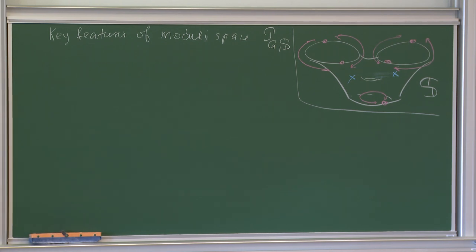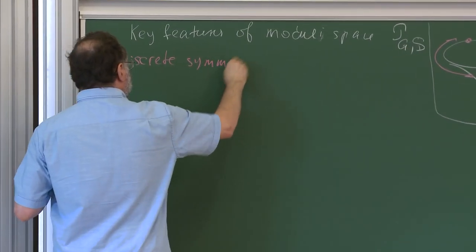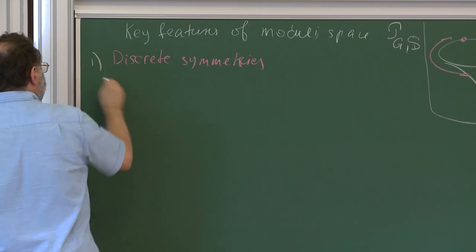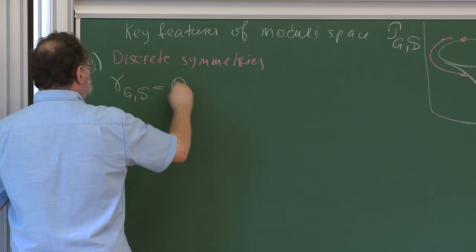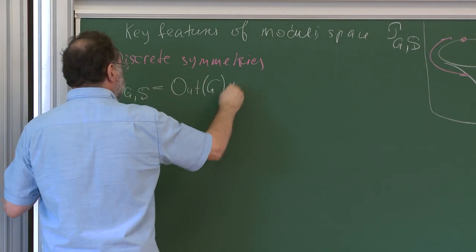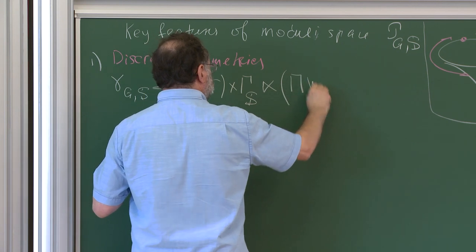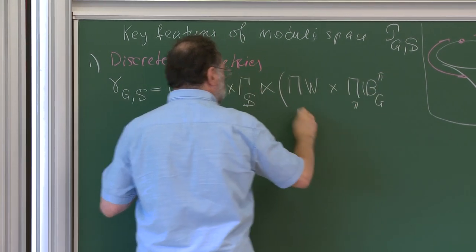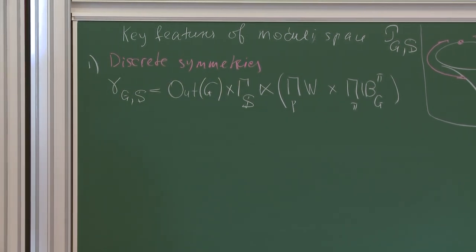I wanted to stress the following data. First of all, we have discrete symmetries. There is a group — discrete group gamma GS — which is given by the automorphism group of G cross mapping class group of S, semi-direct product with the product of the Weyl groups and product of the braid groups over components and Weyl groups over the punctures. It acts by cluster Poisson transformations on the space.